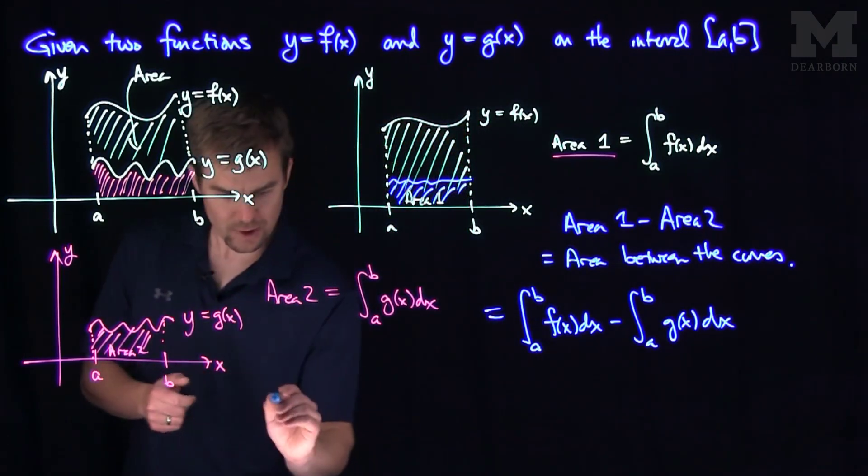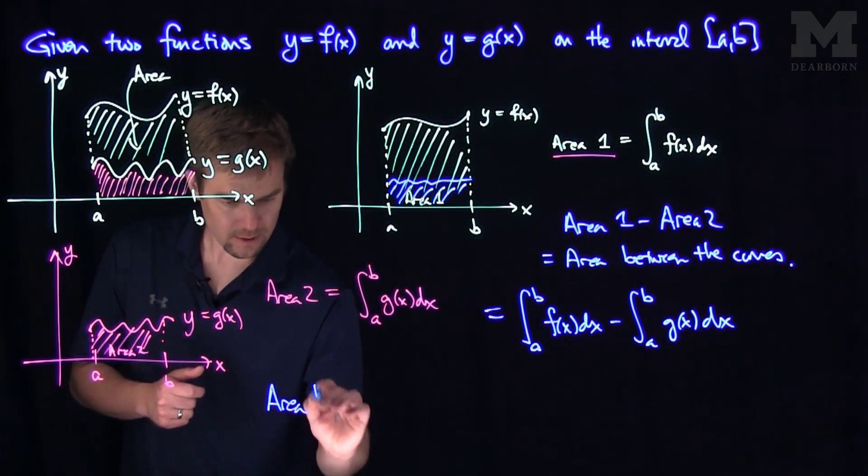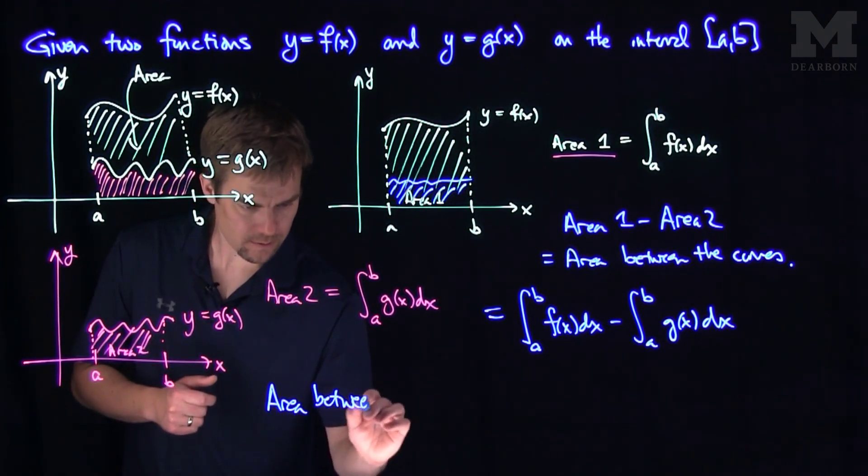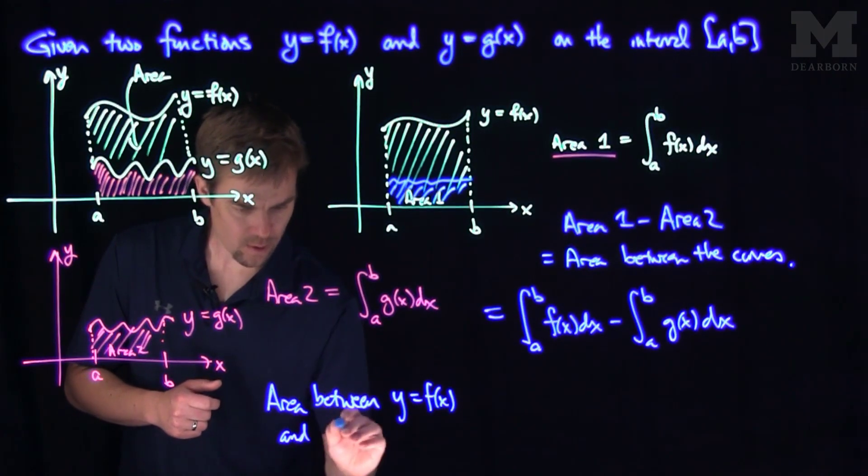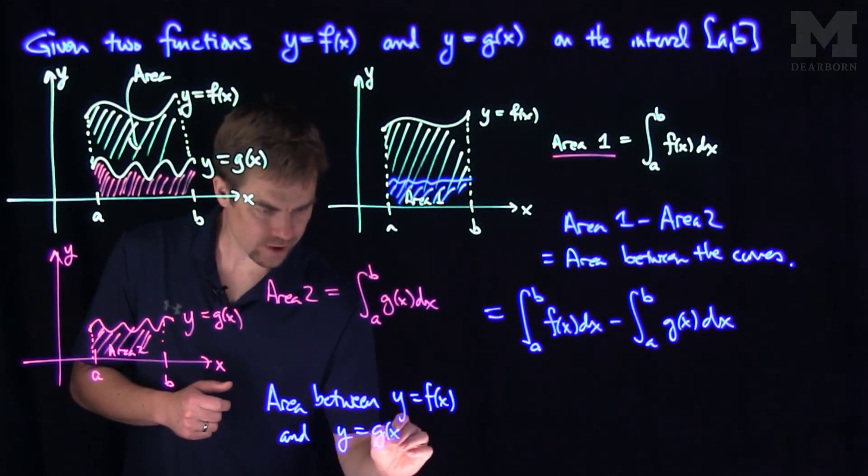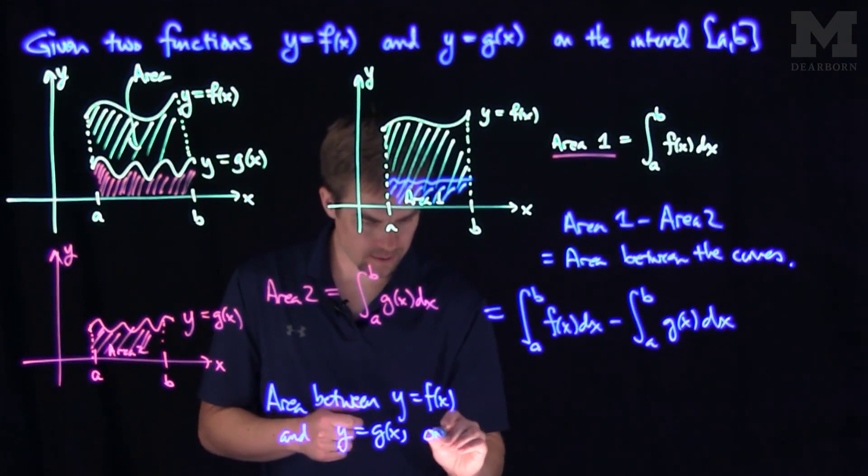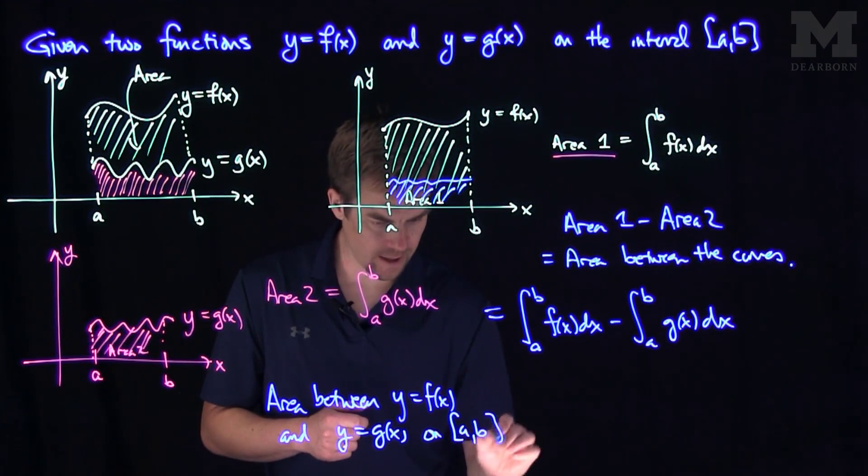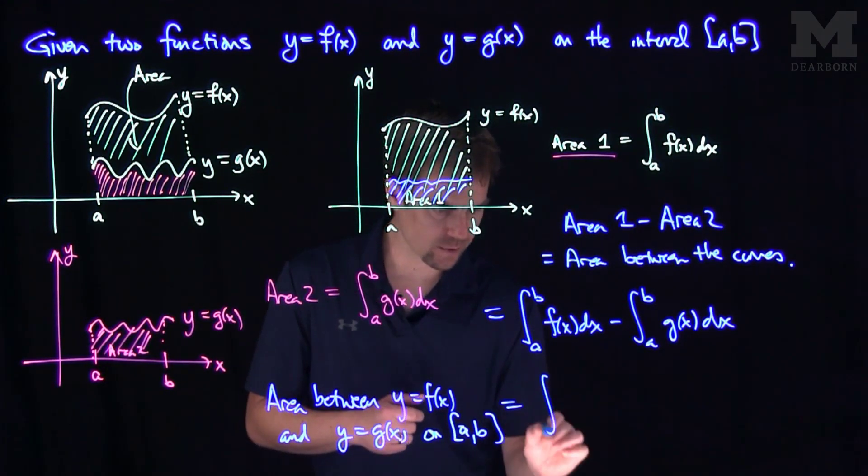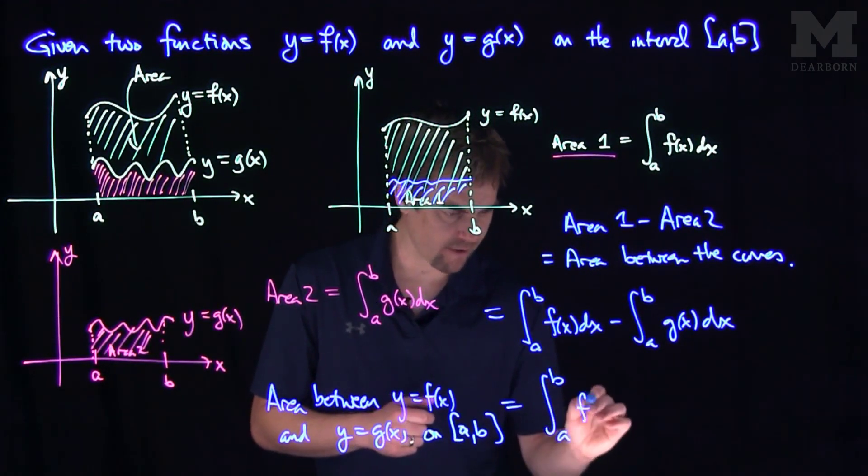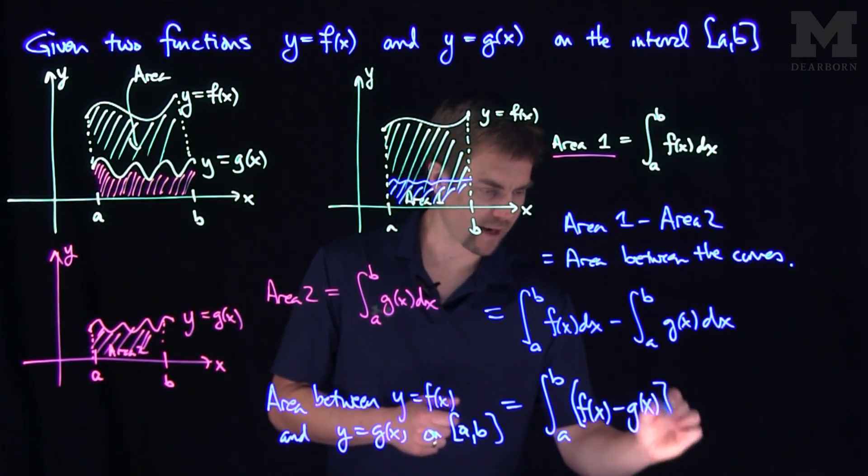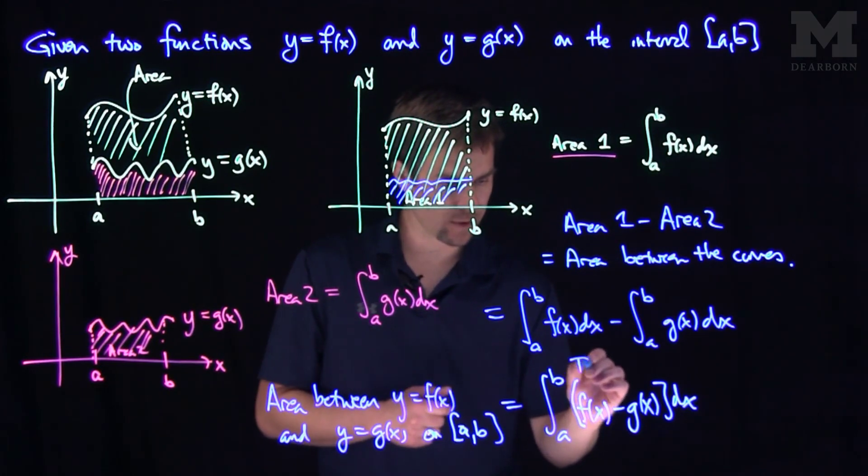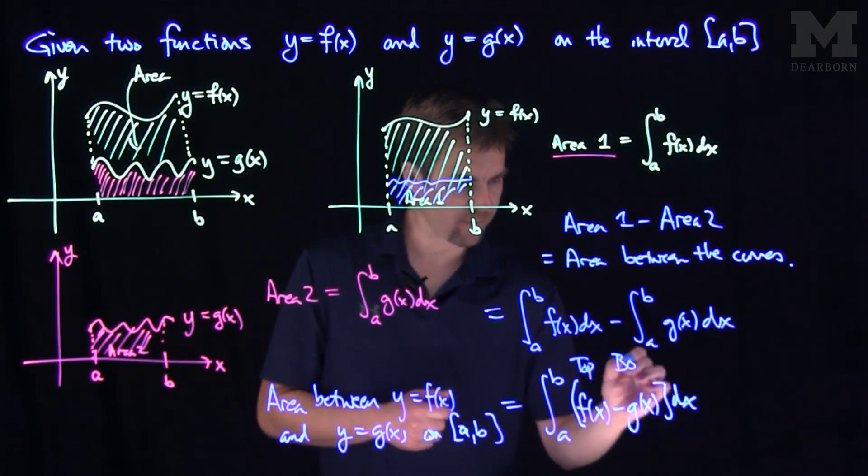And so we get the result that the area between y equals f of x and y equals g of x on the interval a to b is equal to the integral from a to b of f of x, the top function, minus the bottom function, g of x dx. This of course is our top function, this is our bottom function.